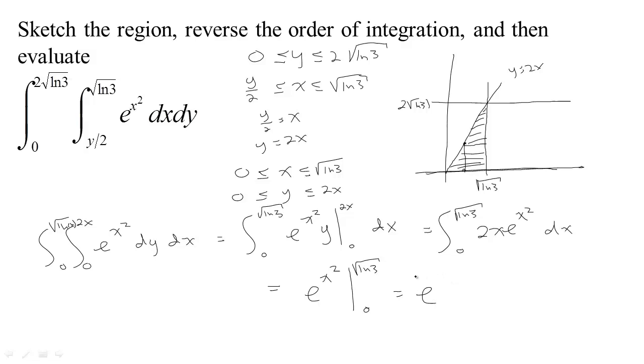Now we just evaluate it between the two endpoints. And we come up with e to, if we square the square root of ln three, we get e to the natural log of three minus e to the, if x is zero, we have zero squared, so e to the zero. Now e to the natural log of three, this is the exponent you put on e to get three. We've put that exponent on e, so we get three. And e to the zero is one, and three minus one is two. So the solution to this problem is two.